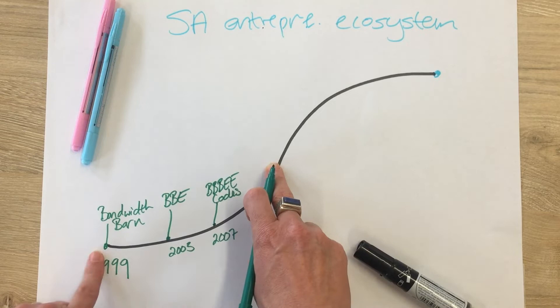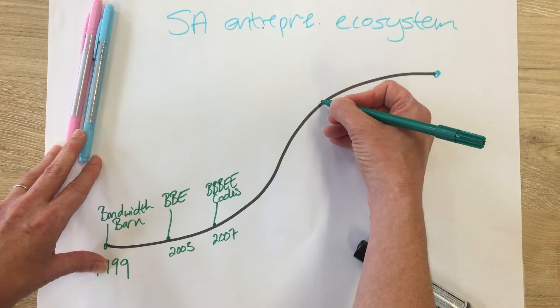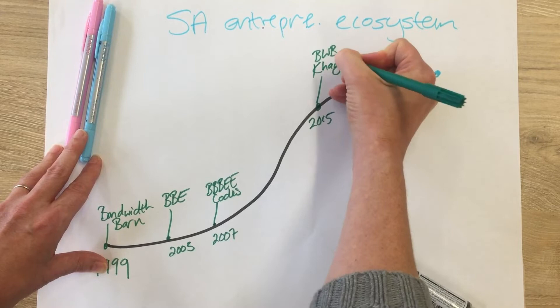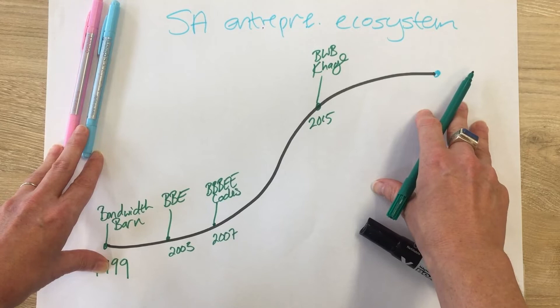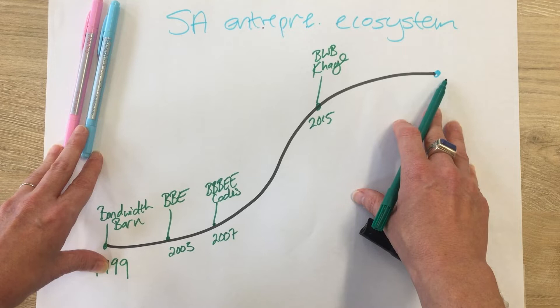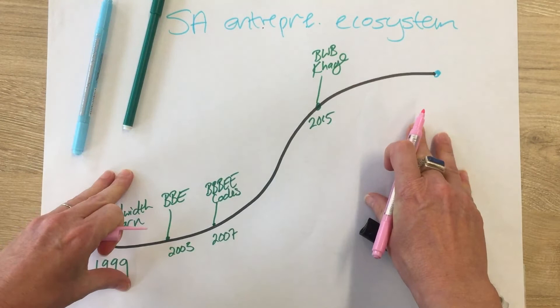We know that the Bandwidth Barn launched a satellite facility for entrepreneurs in the township of Khayelitsha in 2015. Bandwidth Barns are spaces where very early-stage businesses can get office space and some training. This reminds me of the context map where we spoke about accelerators — accelerators are intensive programs for high-growth businesses that often also offer seed funding. I'm going to use a different color to track accelerators, which can help make thinking clearer.